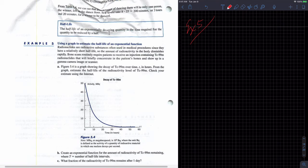So the amount of radioactivity in the body diminishes rapidly. I think barium is an isotope and they use it for gastrointestinal stuff. But you guys are the nurses, so you can slap me around and tell me I'm wrong. So bone scans routinely require patients to receive an injection containing TC99M radionuclides that will briefly concentrate in the patient's bones and then show up in a gamma camera image or scanner.